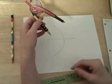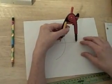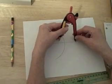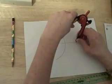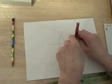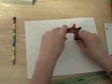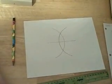Then move the compass to the other endpoint, not changing the radius of the arc. Position the compass on the other endpoint and create another arc.